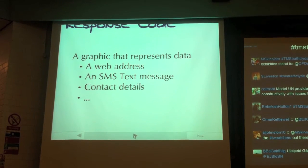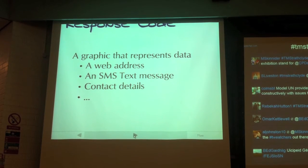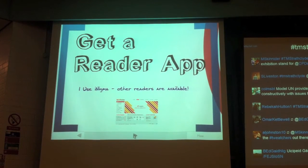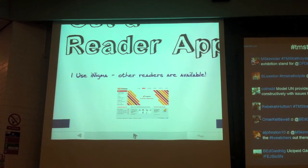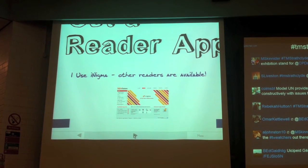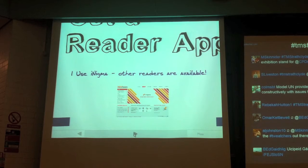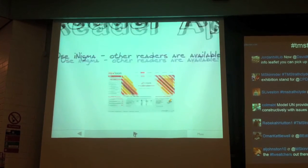So things like that it can do, which are quite smart. Or it can send your contact details — the example I had up a minute ago was actually my contact details. What you need is a reader app, some way of decoding these codes. The one I use is called i-Enigma, and it's available on a variety of platforms. You can use it on a smartphone, but you can also just use it on a laptop or a tablet device. As long as it's got a camera, you'll certainly find some sort of QR reader.